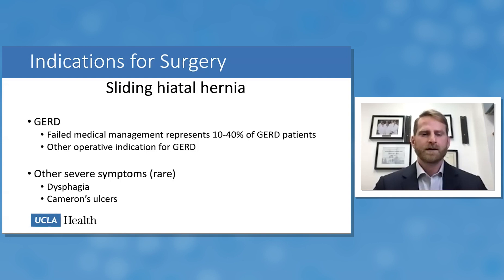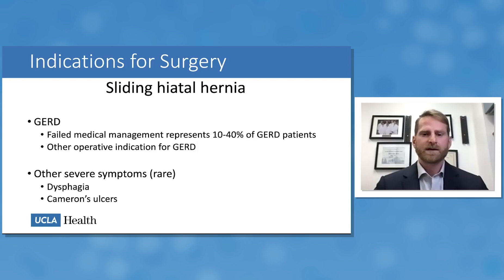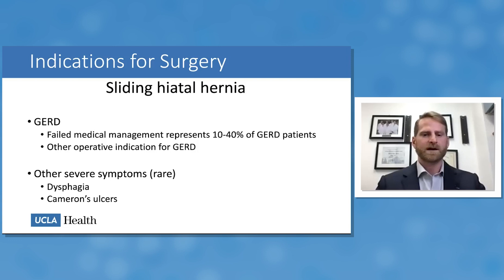Sliding hiatal hernias most often manifest with GERD and rarely have emergent complications. Patients with GERD and associated sliding hiatal hernia are appropriate for medical management, but operative indications for GERD exist: failed medical management — insufficient symptom relief — patient preference not to continue medical management, extra-esophageal manifestations of GERD, or complications such as peptic stricture. Rarely, type one hernias meet indications for operation unrelated to GERD, such as dysphagia or Cameron's ulcers.